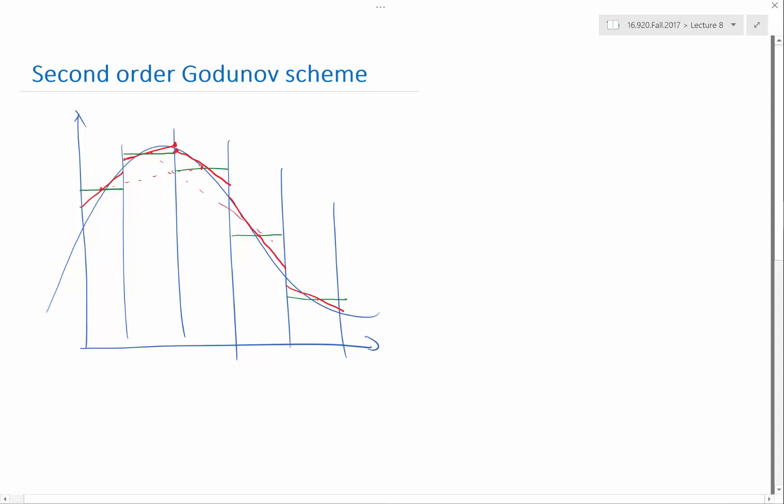You can show that a second-order reconstruction may be the following: I have u_i, u_{i-1}, u_{i+1}. I can compute the slope at i, so this slope reconstruction is equal to (u_{i+1} - u_{i-1}) divided by 2Δx if I have a uniform grid.